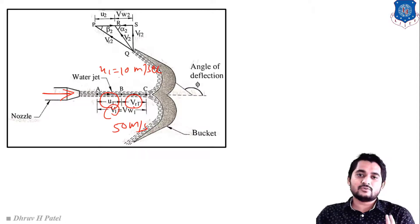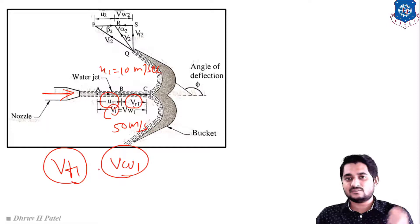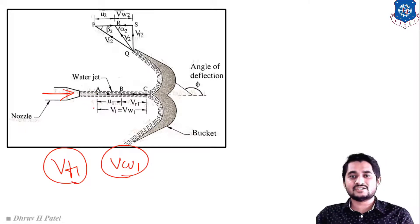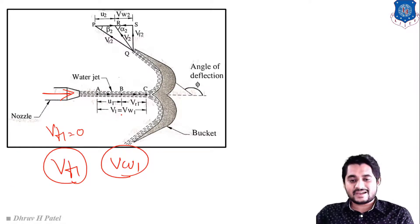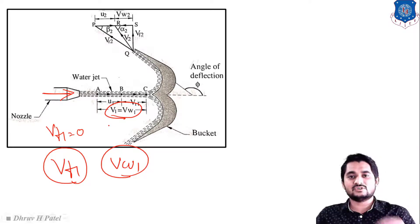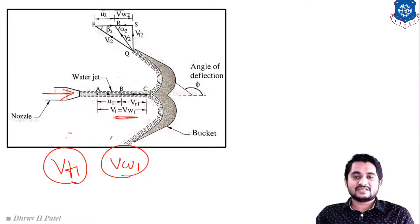The two components of V1 are VF1 (flow velocity, vertical component) and VW1 (whirl velocity, horizontal component). Since V1 is entirely horizontal, VF1 = 0 and VW1 = V1. Therefore at the inlet velocity triangle, alpha1, beta1, and VF1 are all equal to zero.